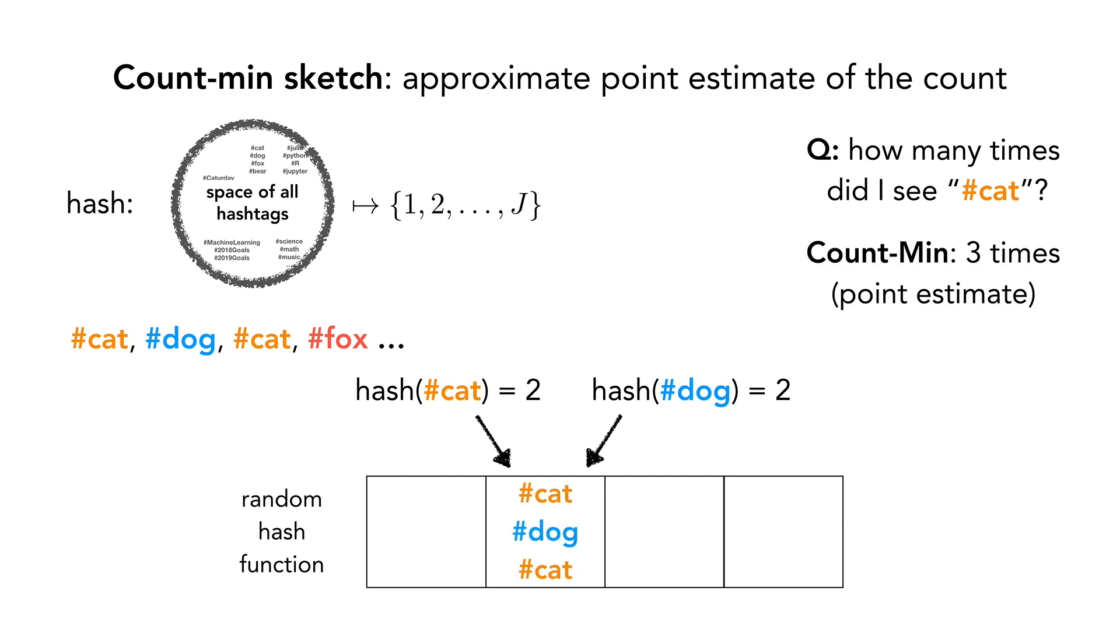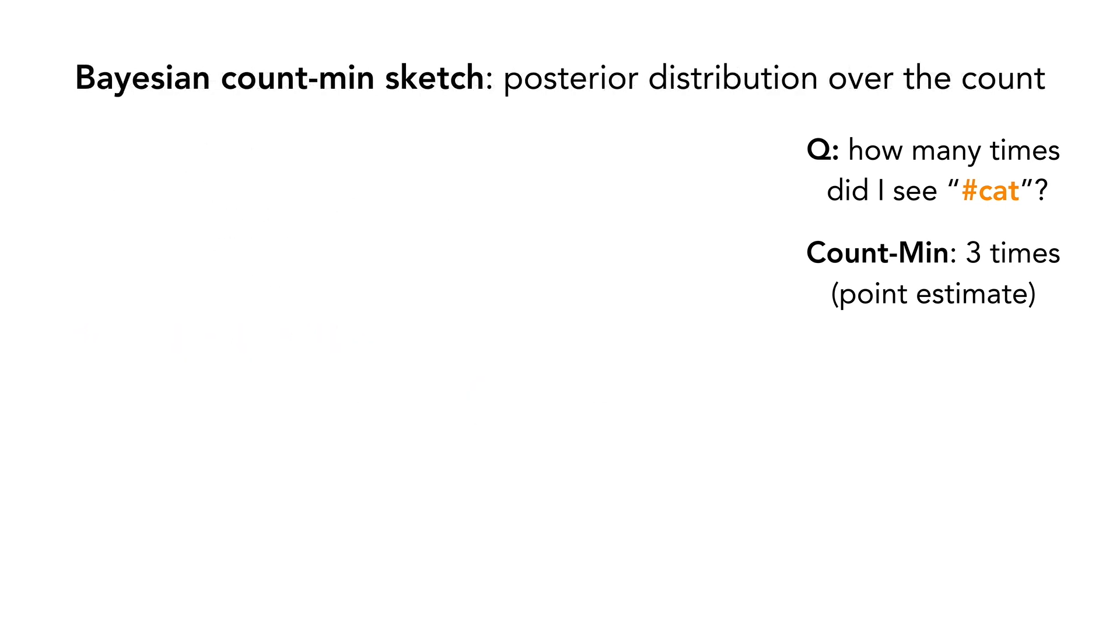The Count-min sketch estimator provides an estimate for the true count based on the number of tokens that hashed into this bin. However, this is a single point estimator that does not quantify the uncertainty in the count.